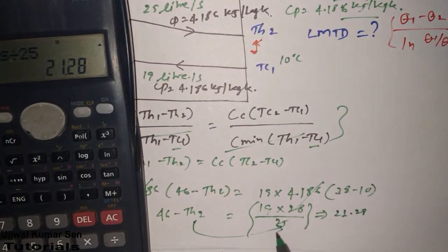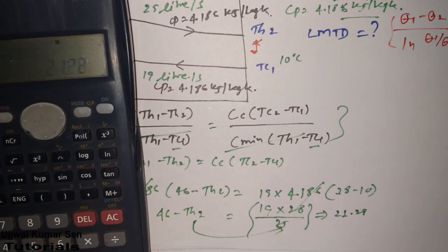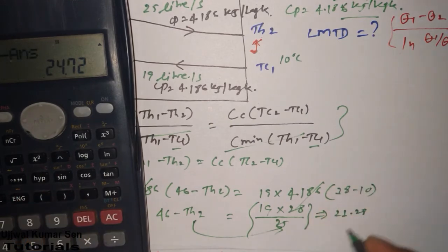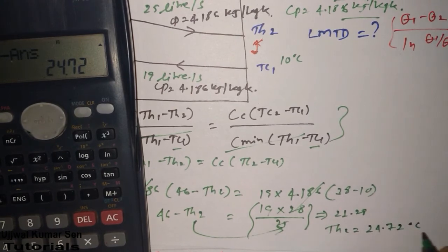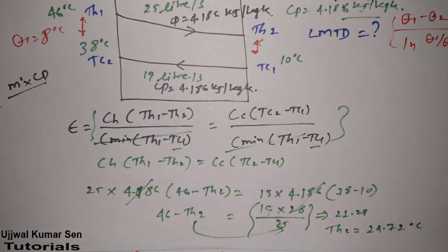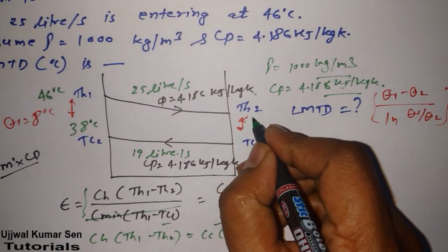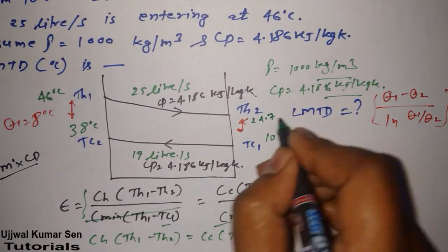Now send this TH2 to this side and this one to this side. So we can say that 46 minus answer is this. So TH2 is what? From here we can find out. We find out actually 24.72 degrees Celsius. So what is the value of TH2? 24.72.